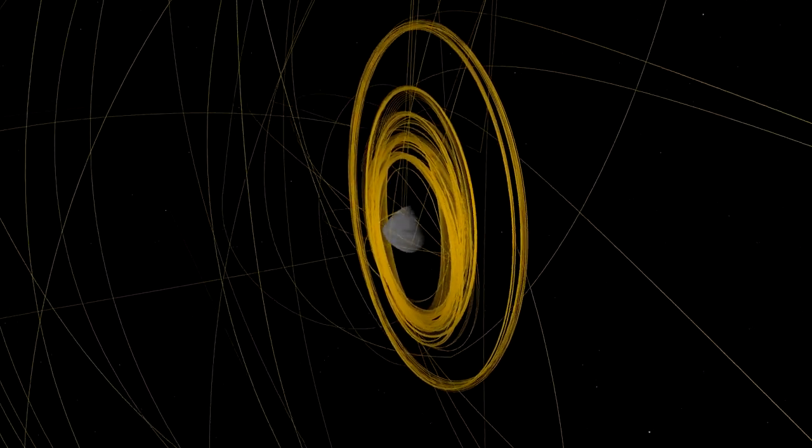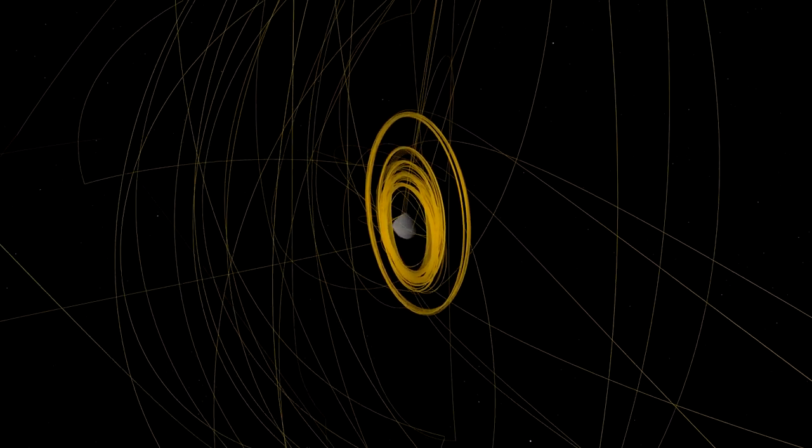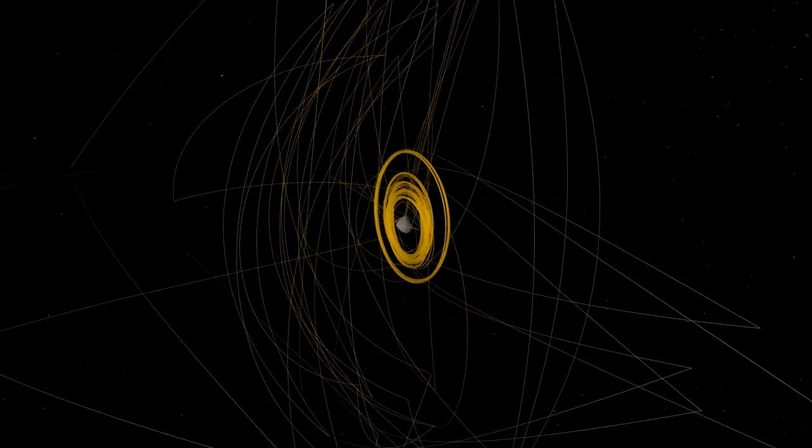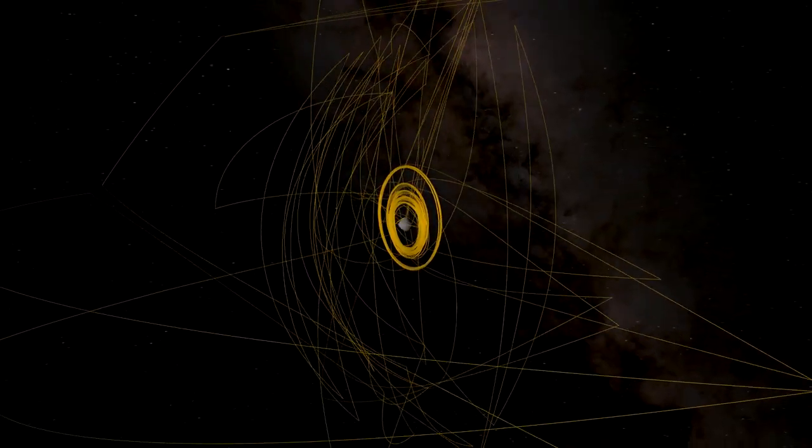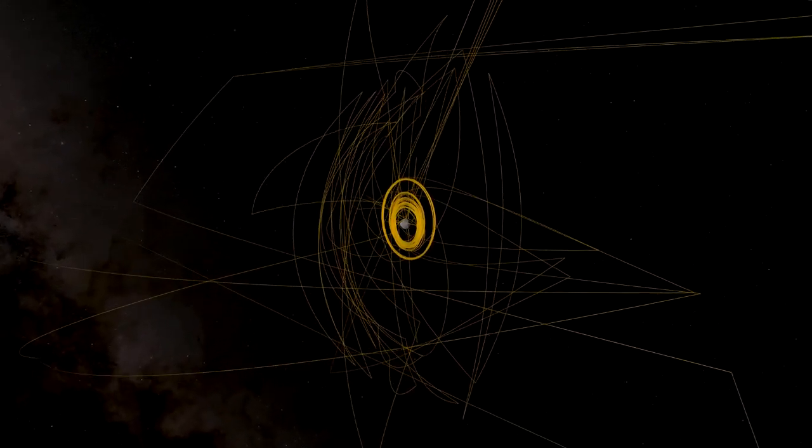Following TAG, the spacecraft drifted to a safe distance away from Bennu. By the end of October, mission controllers determined that it had exceeded its goal of collecting 60 grams of asteroid material. They directed it to stow the sample in preparation for return to Earth.